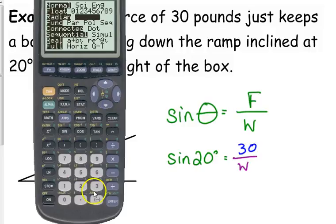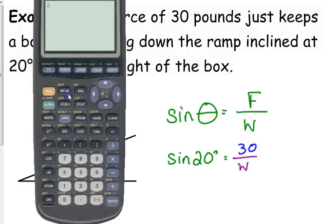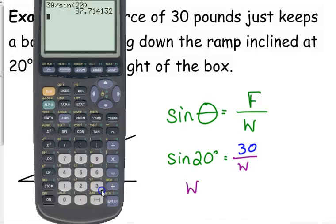This is the one where we divide because the variable is on the bottom. Again, make sure you are in degree mode. Make sure your calculator has not been reset since yesterday. 30 divided by the sine of 20 degrees, and that gives us a weight of approximately 87.7 pounds.